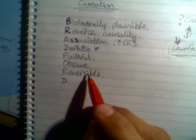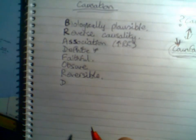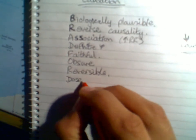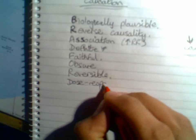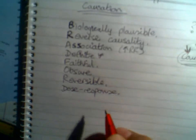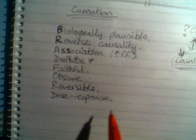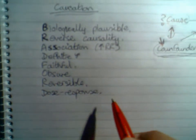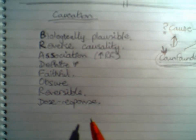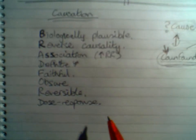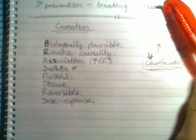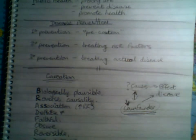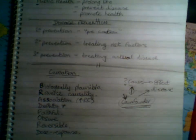R is for reversible — if we take away cigarette smoking, does that lower rates of lung cancer? That would strongly suggest it is causal. Finally, D is for dose response: do people who smoke more have higher rates of lung cancer than people who smoke less? That's dose response. Anyway, nice mnemonic there — BRADFORD — to cover the Bradford Hill criteria along with a few key definitions.